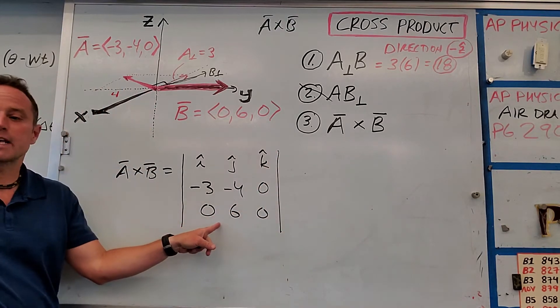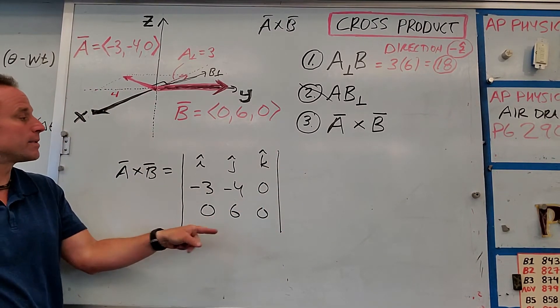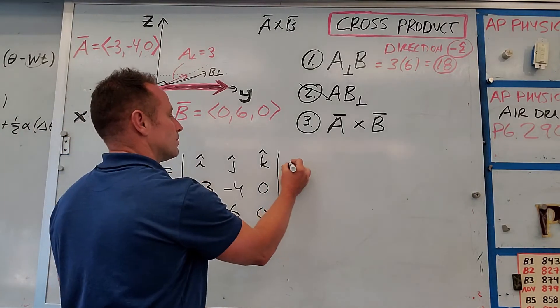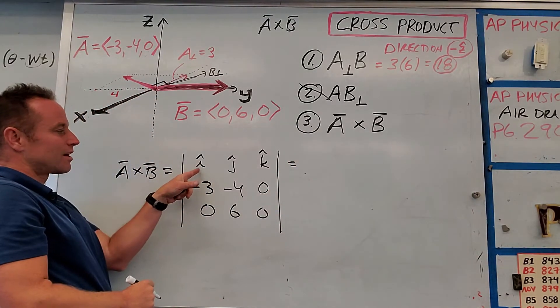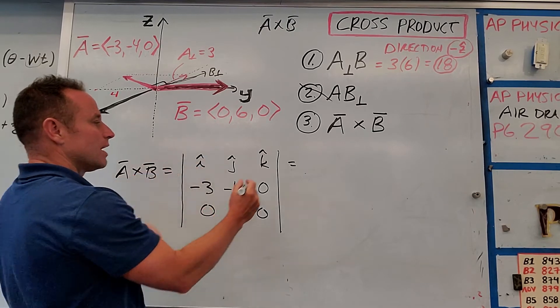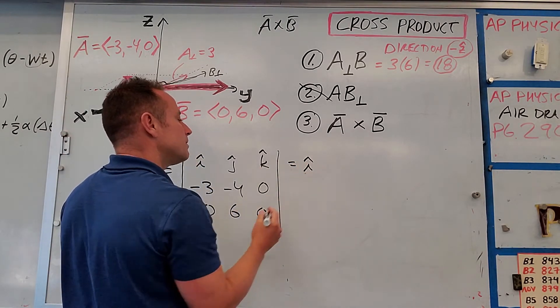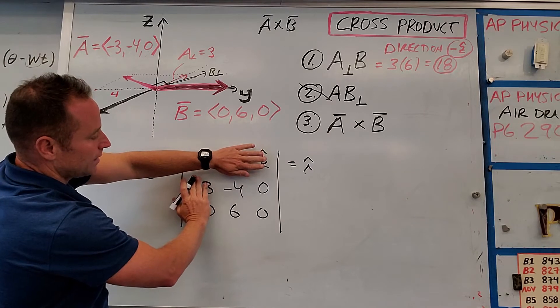And then what we need to do is calculate this determinant. And so what we'll do is we'll expand by minors. We'll start in the top left. So we have the I hat component. Cover the row and the column.